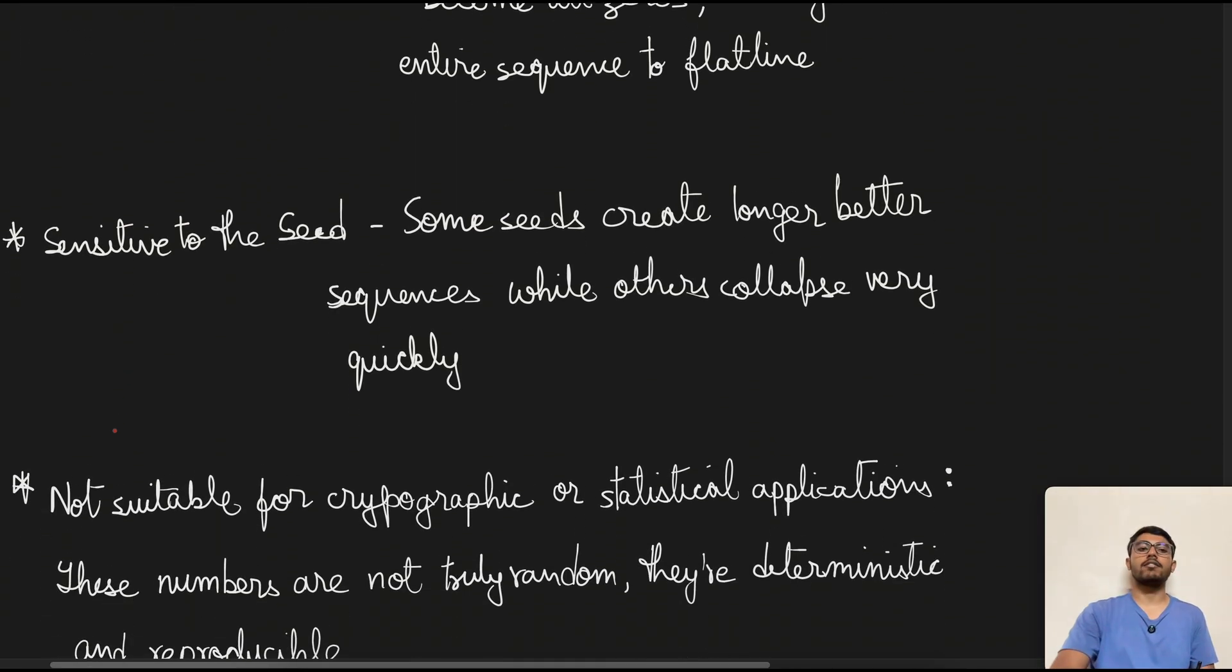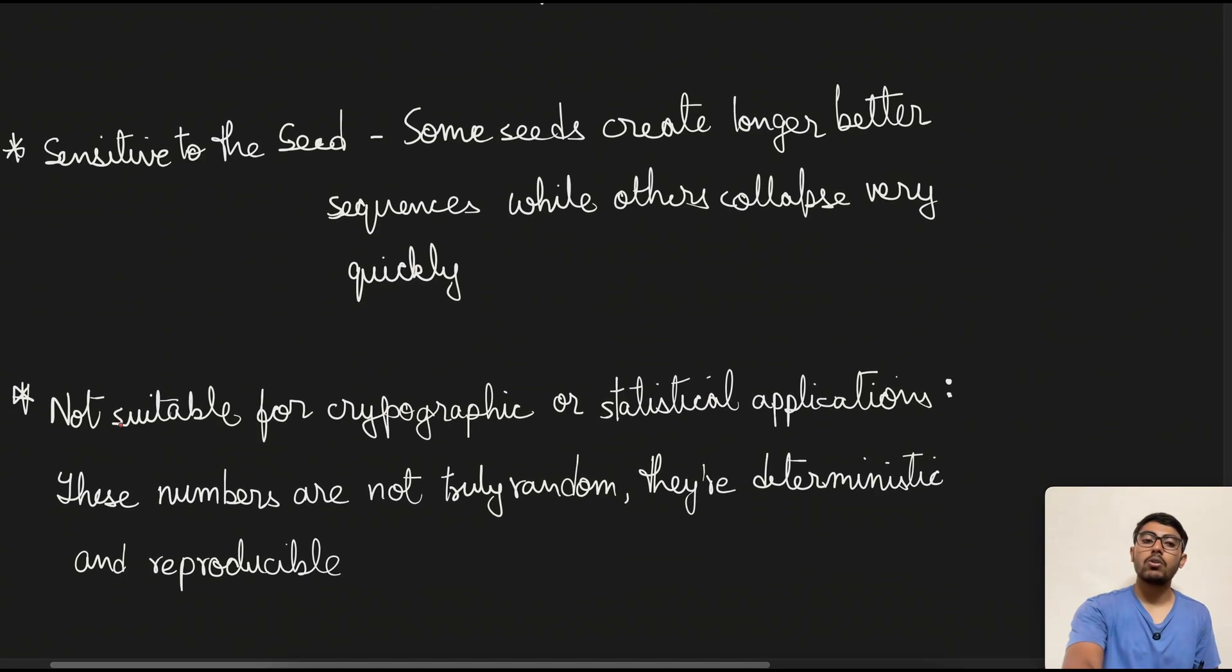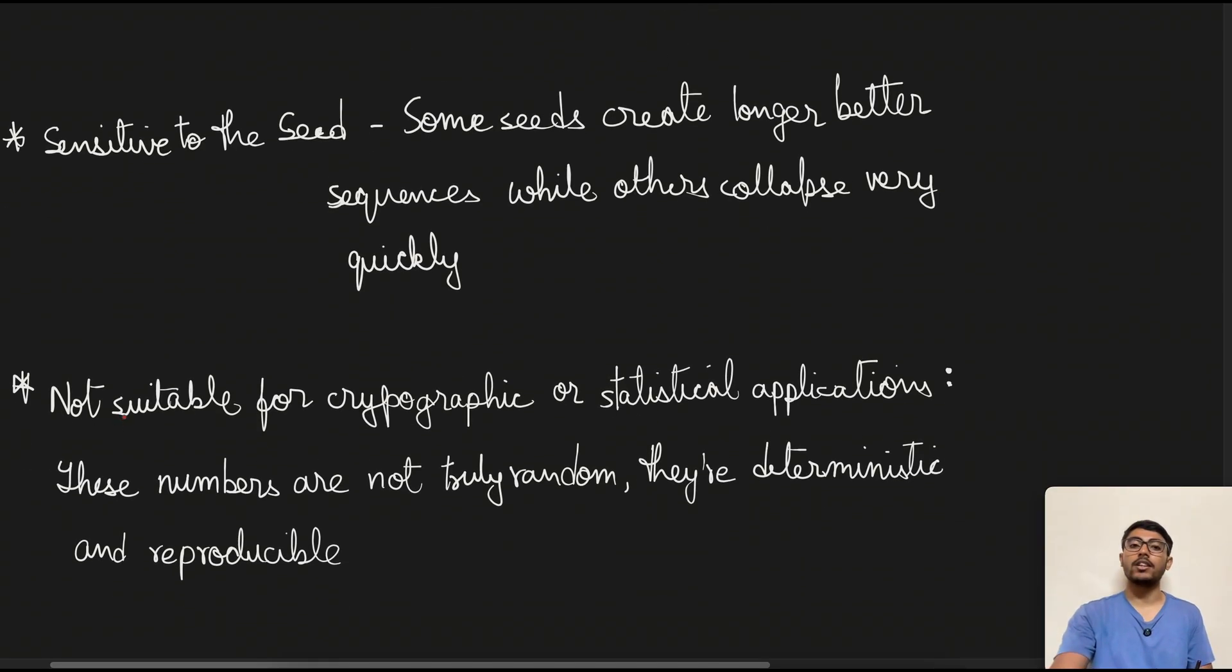The fourth one would be that this is not suitable for cryptographic or statistical applications, because you might be guessing that these numbers are not truly random. They are deterministic and now kind of reproducible by knowing this particular process. And it's just the seed that is protecting all of them. If the person is now able to guess the seed and the digits, then it's obviously gonna defeat the purpose.